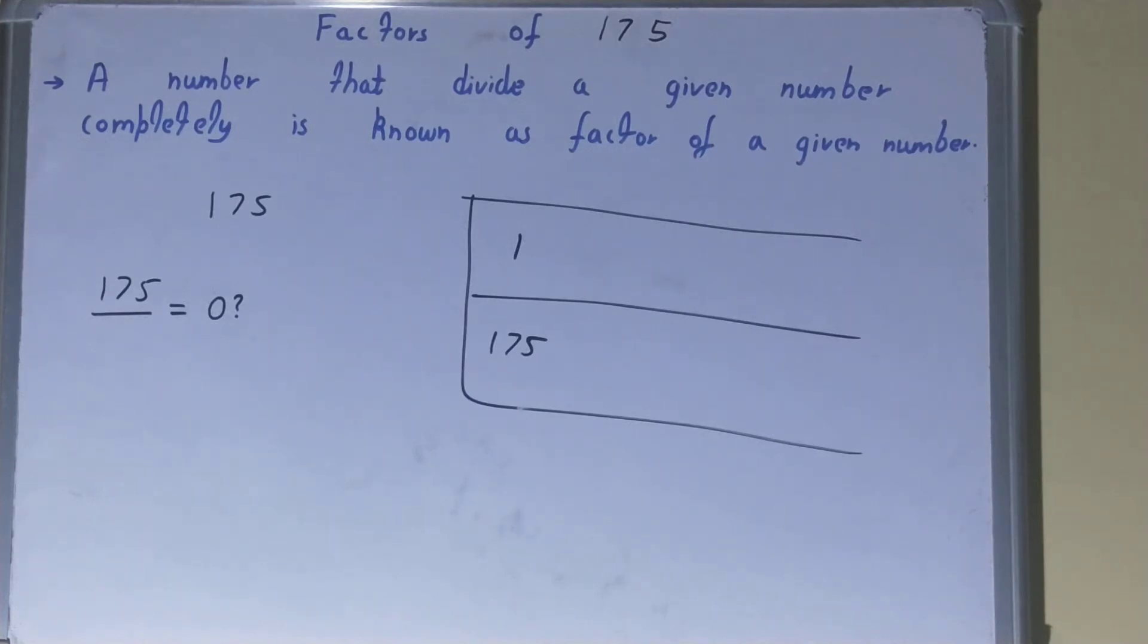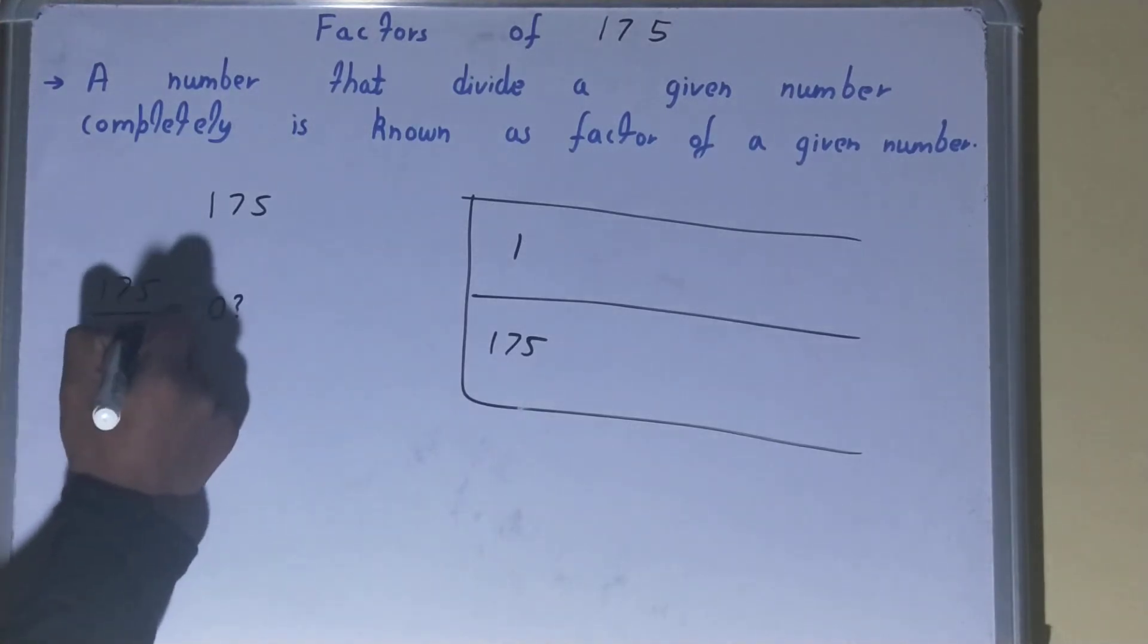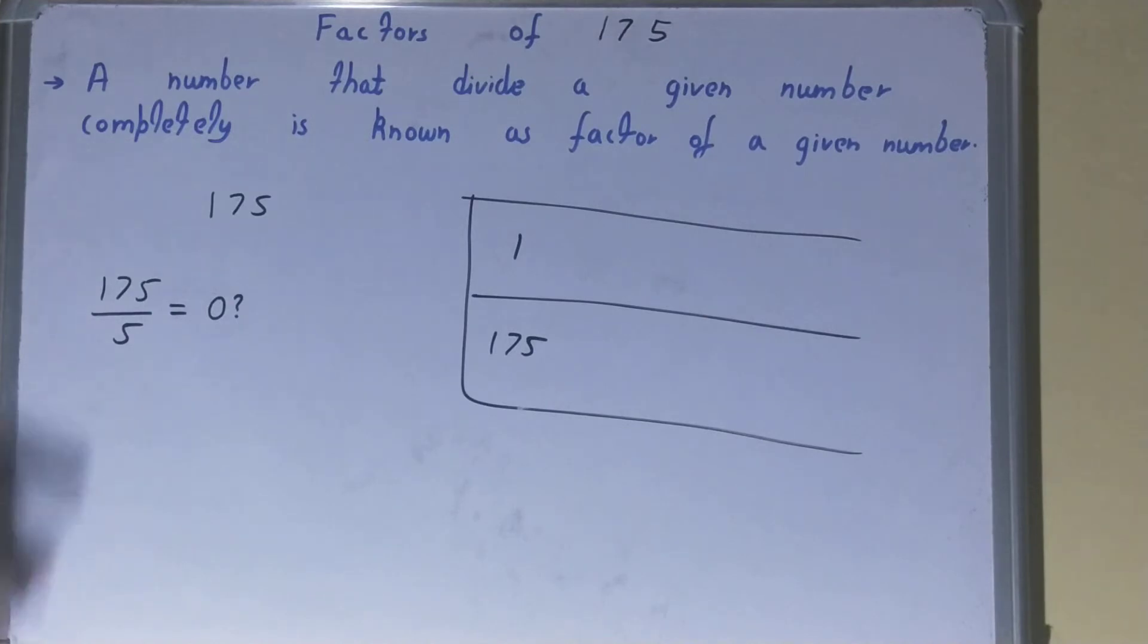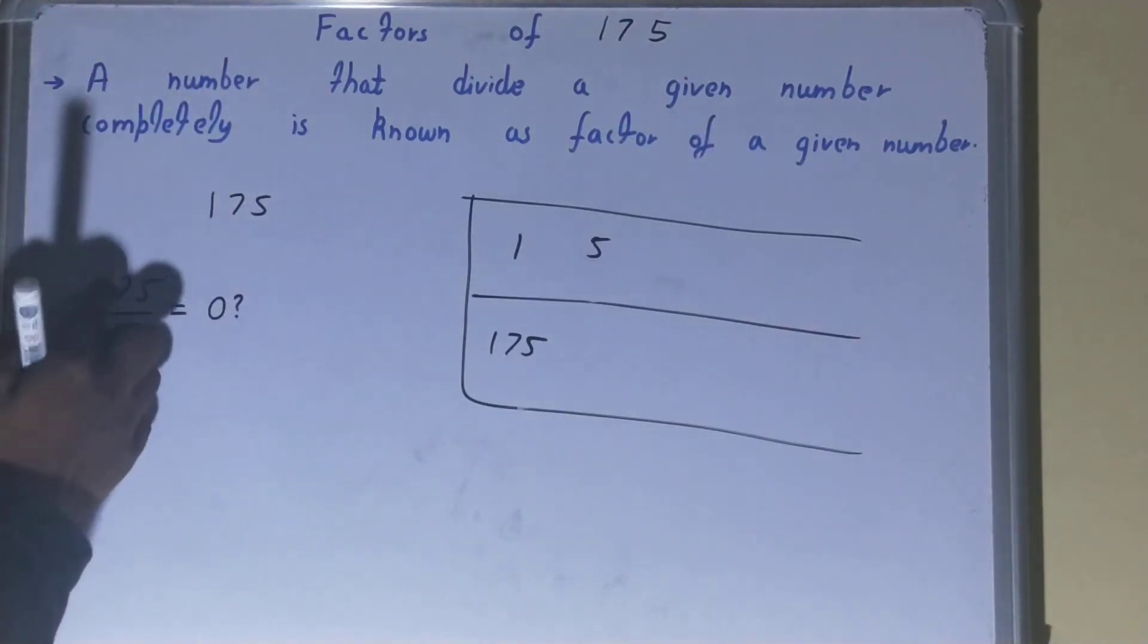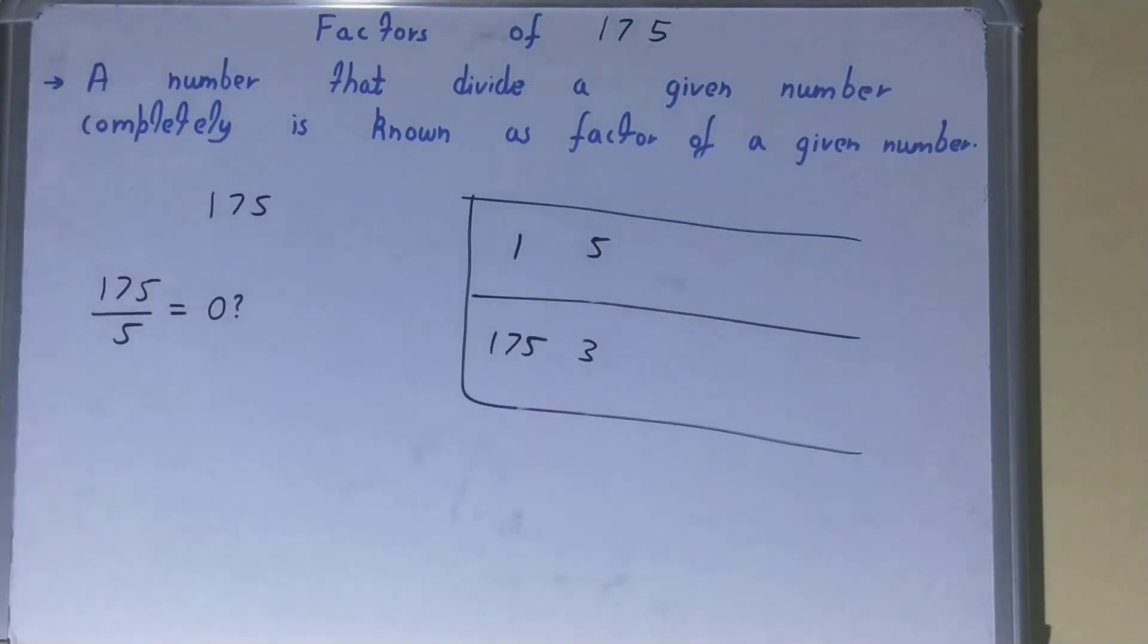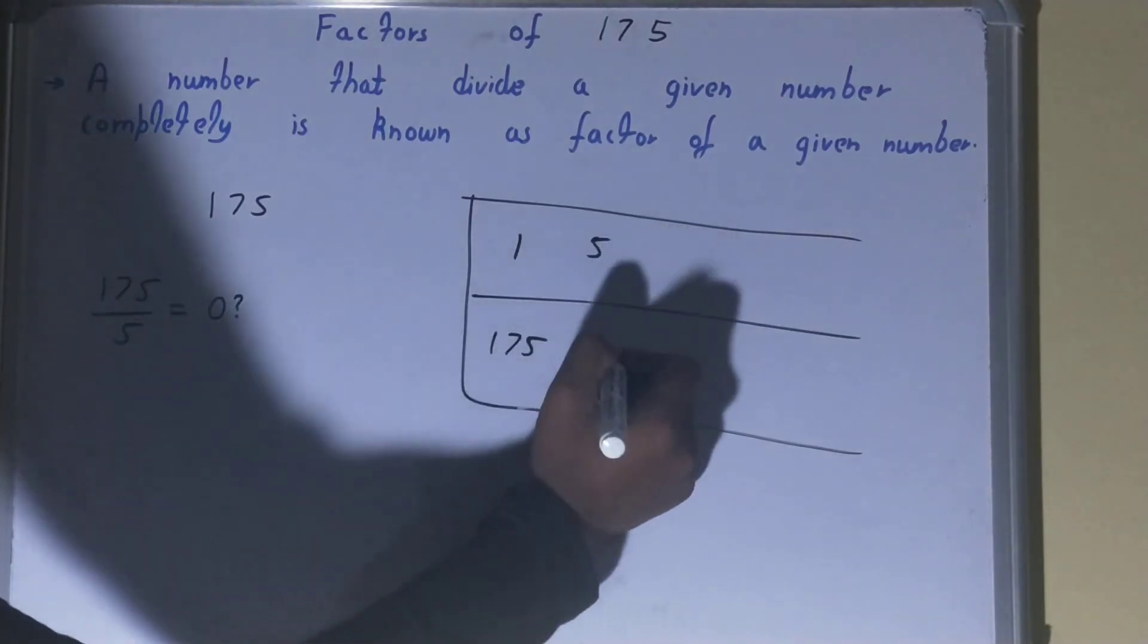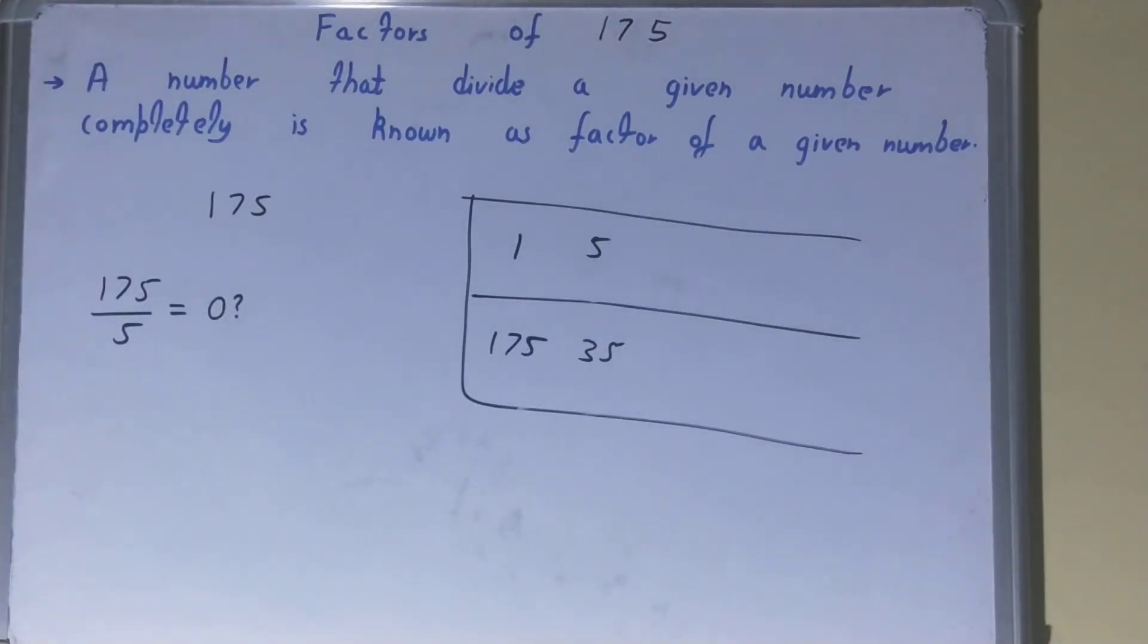Okay, so we'll check with 5 directly. The last digit is 5, so yes it is divisible by 5. So divide it. 5 is a factor, first let's write. 5 times 3 is 15, 3 times 5, it will be 35 times. Okay, so 5 is a factor and 35 will also be the factor automatically.